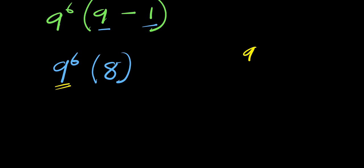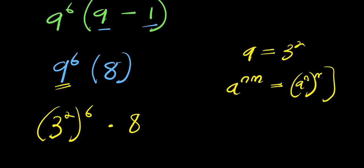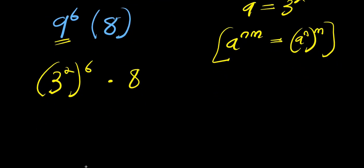So we need to find the value of nine to the power six times eight. Remember, nine is three to the power two, so we have three to the power two, all raised to the power six, times eight. Applying the power rule, two times six gives us twelve, so this becomes three to the power twelve, times eight.